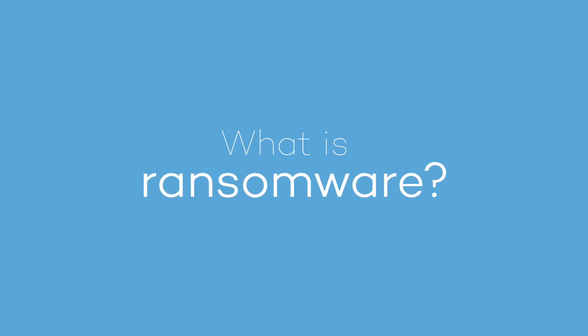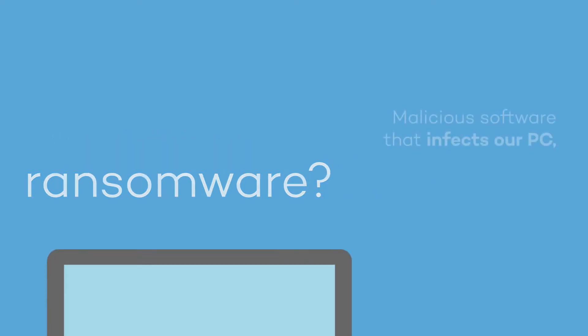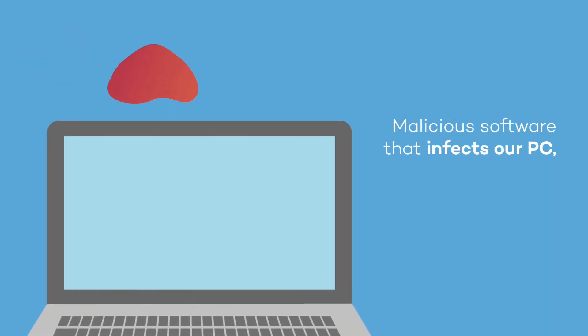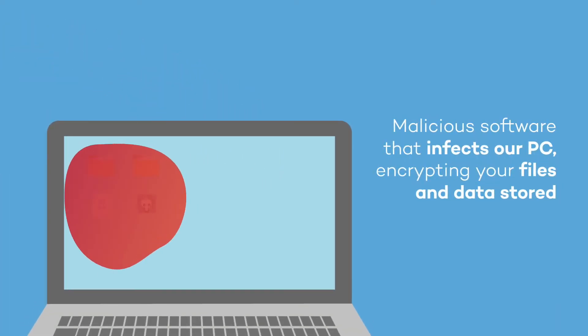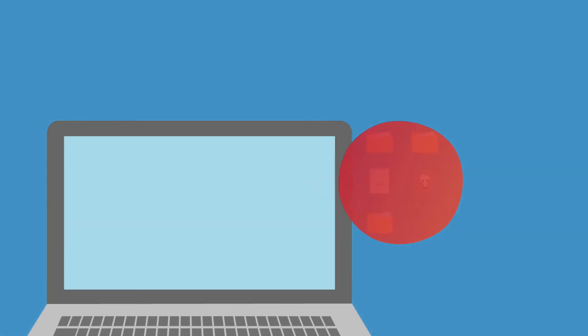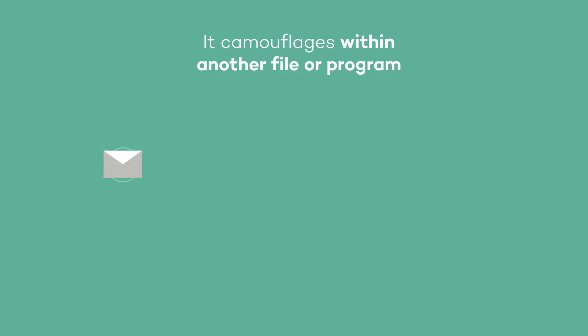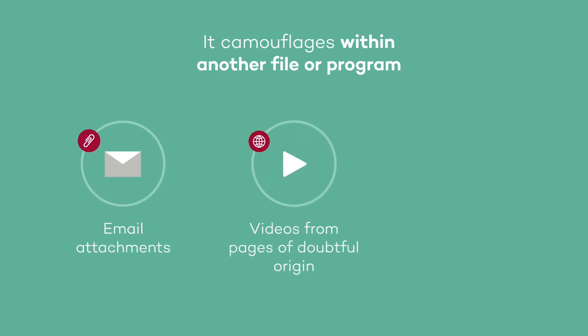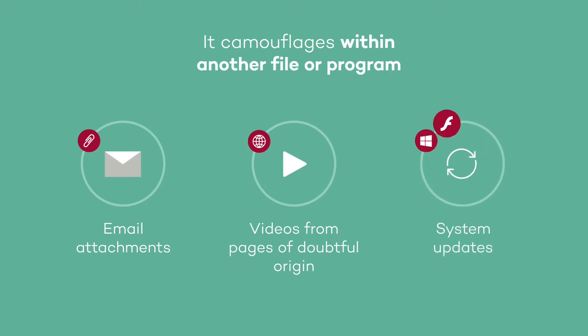What is ransomware? Ransomware is malicious software that infects your computer. Its purpose is to encrypt your files by grabbing control of all your information and data. It camouflages within another file or program such as email attachments, videos from pages of doubtful origin, or system updates from reliable programs such as Windows or Adobe Flash.